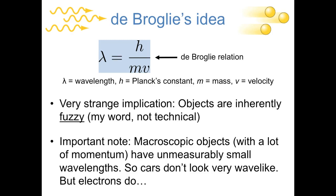I do want to point out that all of these ideas have to be consistent with everything we know about the world around us. So if you think about a macroscopic object, something like a car, that has a relatively large classical momentum, a large product of mass and velocity, because mv is in the denominator, something that has a large momentum is going to have an unmeasurably small wavelength. So for something like a car, we don't really have to worry about its wave-like character.